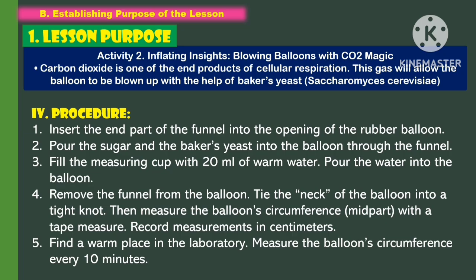For the procedure: first, insert the end part of the funnel into the opening of the rubber balloon. Second, pour sugar and baker's yeast into the balloon through the funnel. Third, fill the measuring cup with 20 ml of warm water and pour the water into the balloon. Fourth, remove the funnel from the balloon and tie the neck of the balloon into a tight knot.